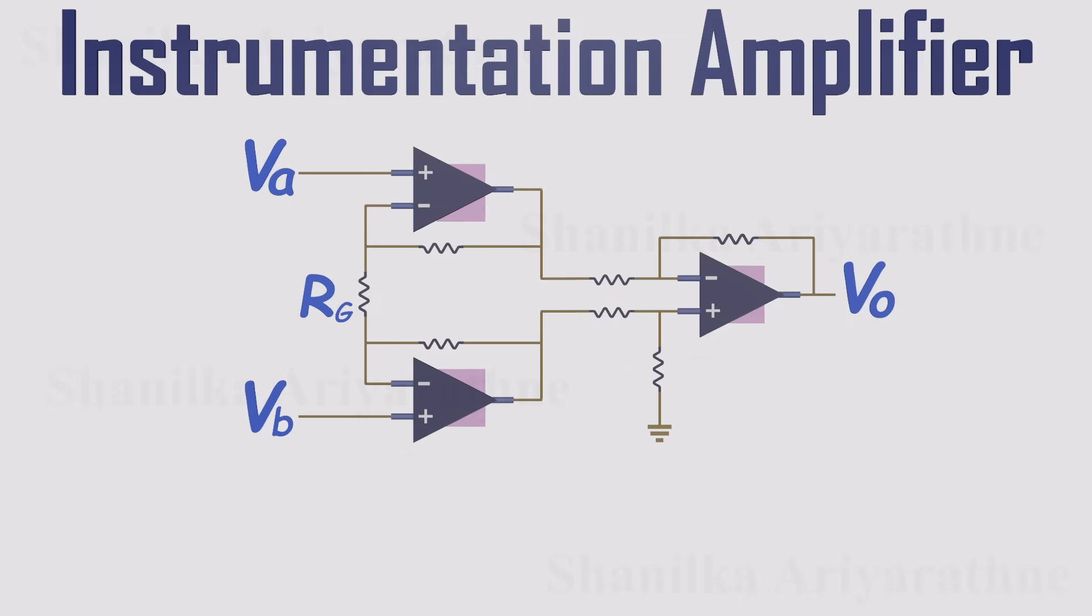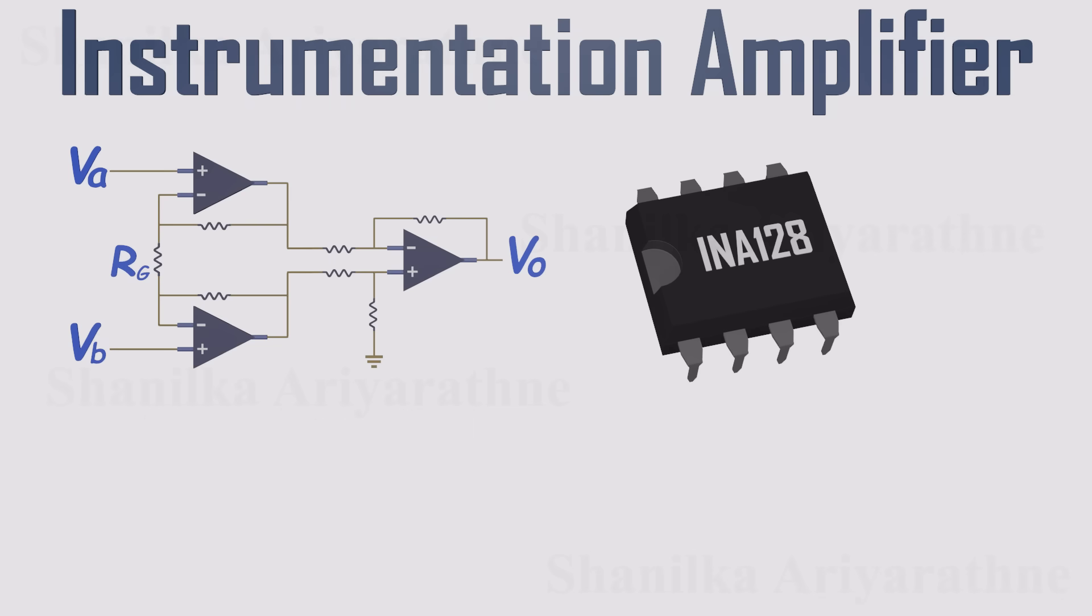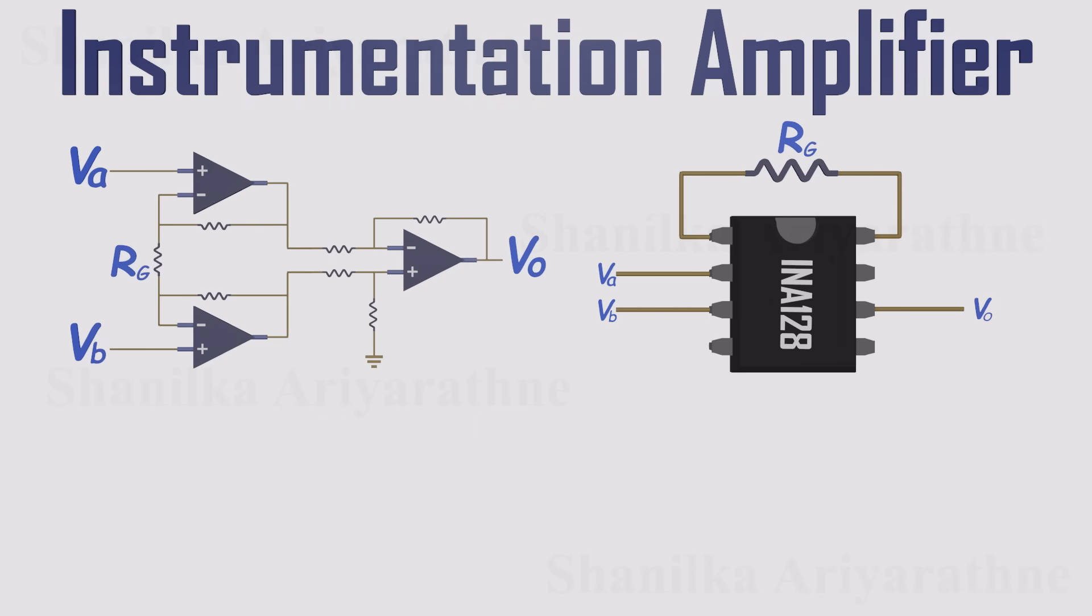They've become one of the most practical and powerful applications of op amps. You can build one yourself using three op amps and some precision resistors. Or, if you want greater accuracy and convenience, you can use a dedicated instrumentation amplifier IC. Here's what makes them so useful.